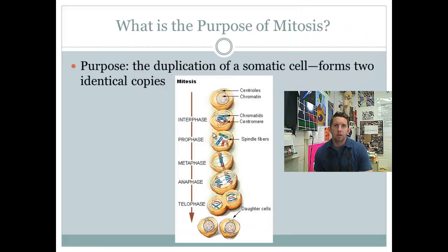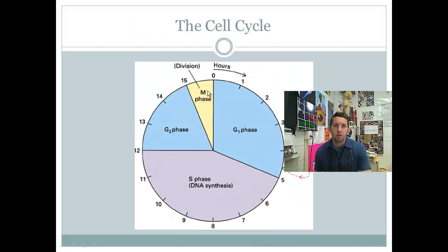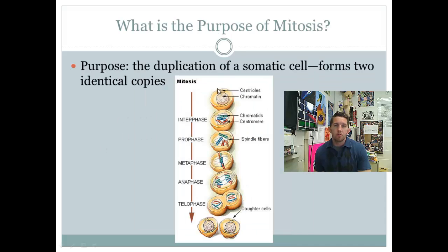What's the purpose of the cell cycle? It details the entirety of the cell's life, but the cell naturally wants to reproduce. The purpose of mitosis — the M phase of the cell cycle — is to duplicate a somatic cell. A somatic cell is a body cell with 46 chromosomes; it's diploid. The goal is to form two new identical copies called daughter cells.